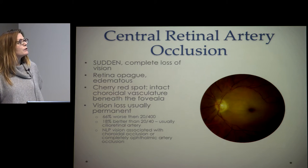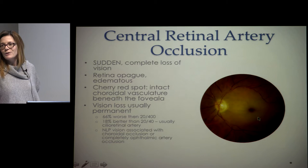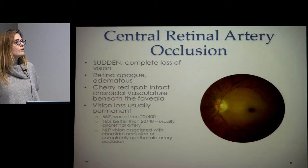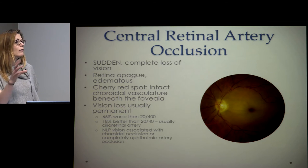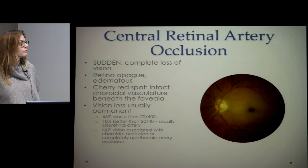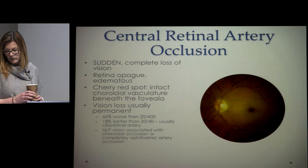Central retinal artery occlusion patients usually present with sudden and complete loss of vision with no pain. The retina is very edematous and you get this cherry red spot — you're seeing choroidal flow through the foveal vascular zone where the overlying retina is thin. Vision loss is usually permanent. That retinal edema and whitening will resolve over about a month, leaving you with a pale optic nerve and very attenuated vessels. If they have NLP vision, it's not going to be a central retinal artery occlusion — NLP indicates a complete ophthalmic artery or choroidal occlusion.